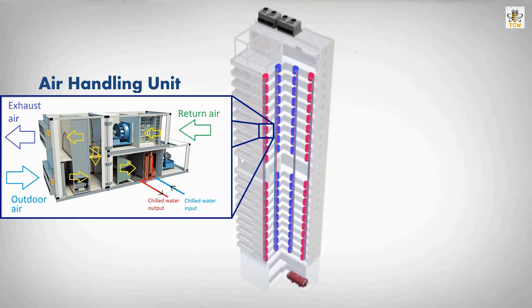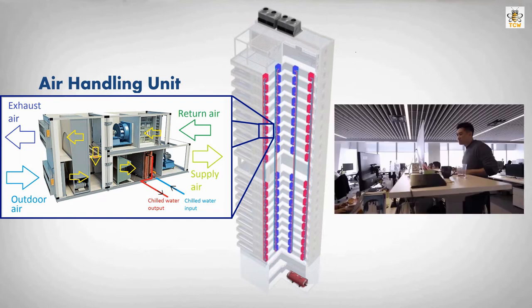When the mixed air passes through the coil, the air temperature becomes lower. The air is then filtered and called supply air. The supply air is then redistributed using a ducting system and discharged throughout the grills. You can see a lot of air conditioning grills on the ceiling. The supply air mixes with the existing room air and regulates the building's air temperature.